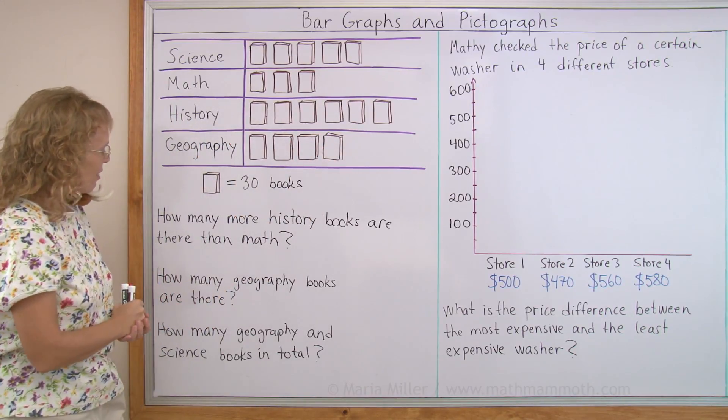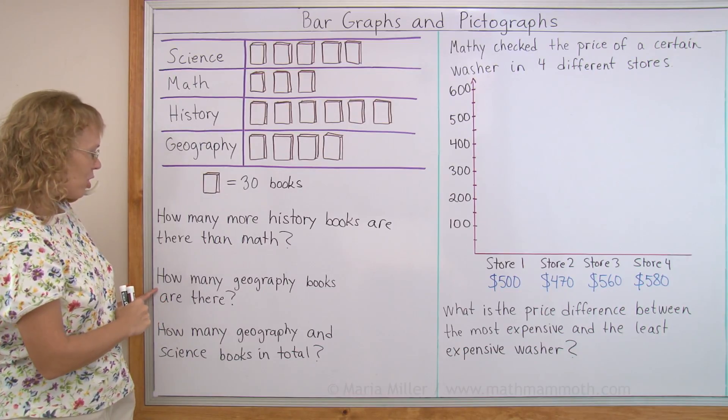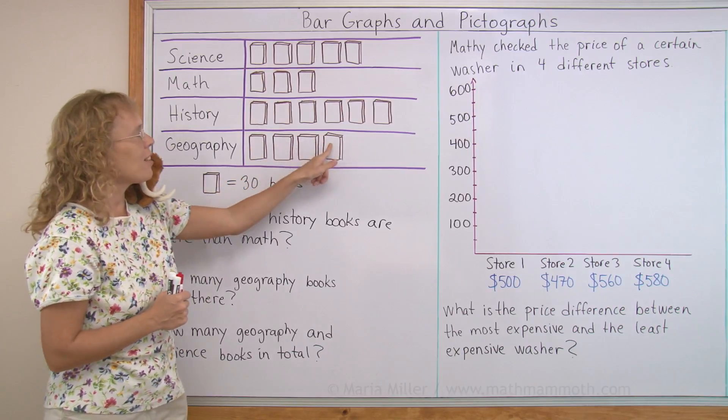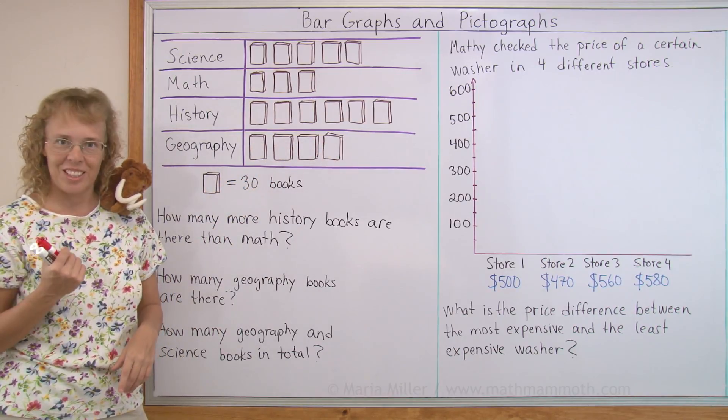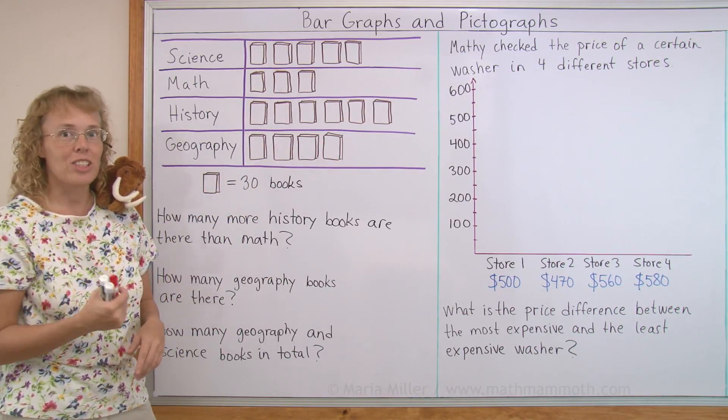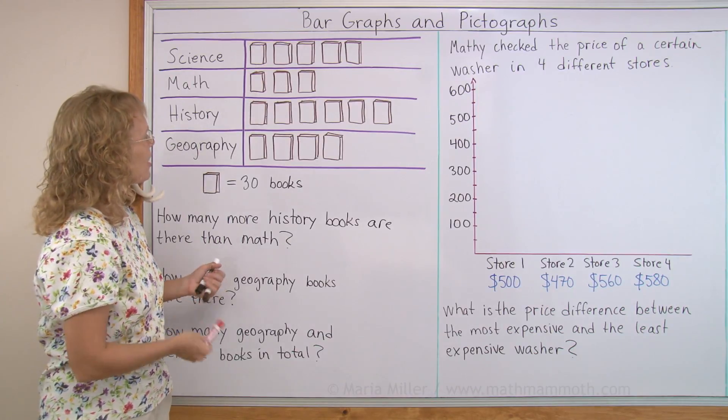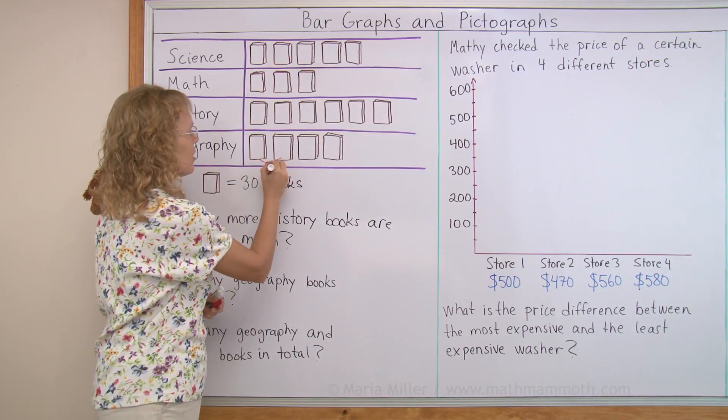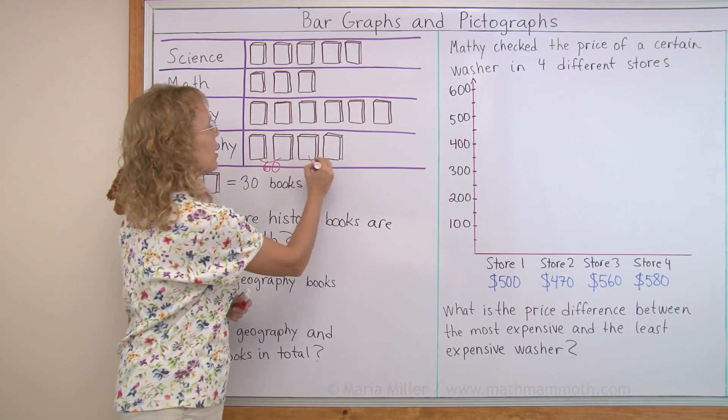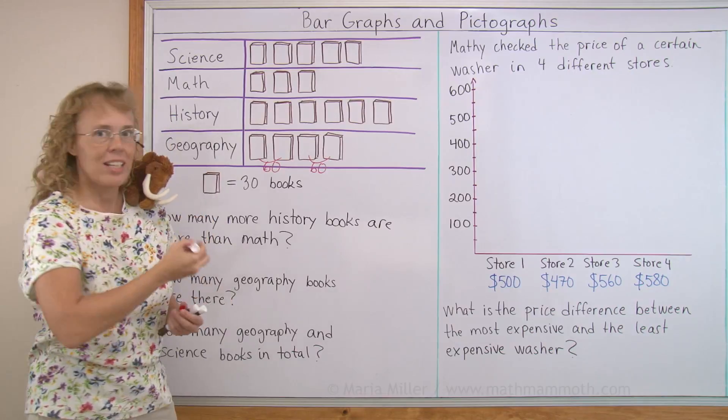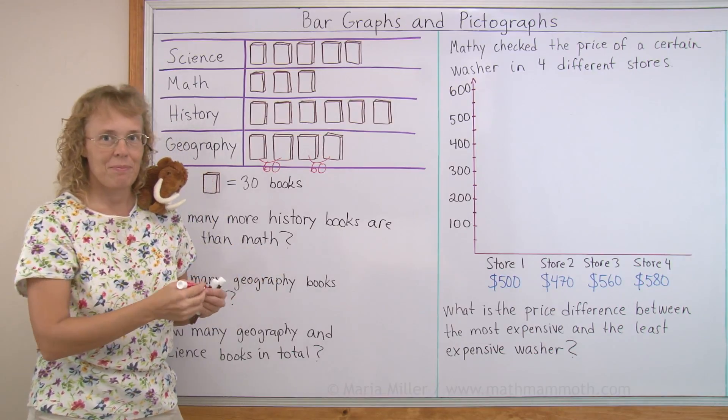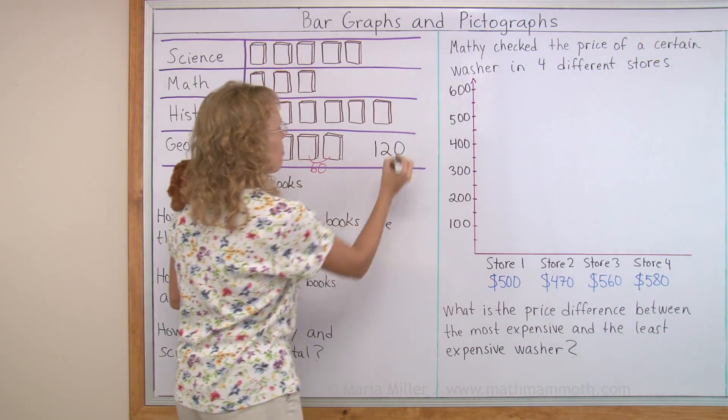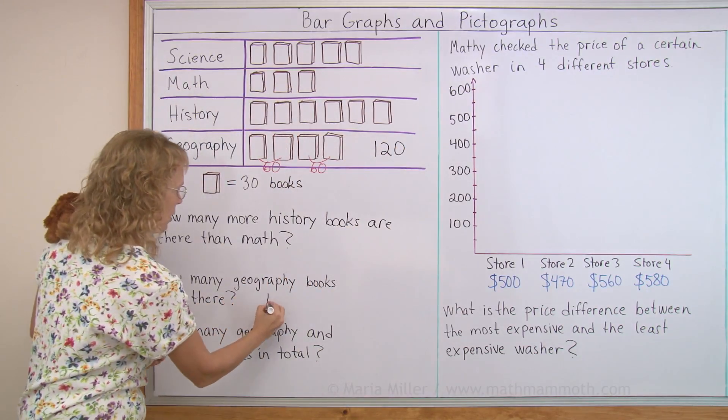I have a question here. How many geography books are there? Let's solve that first. How many geography books are there if each symbol or picture is 30? Think of it this way. 30 and 30, how much is that? That's easy. These two are 60, right? And these two are 60. And now add 60 plus 60. 120. I'll write that number here because we're going to use it later.